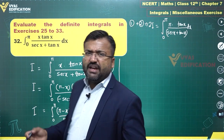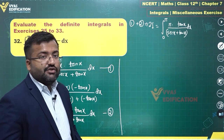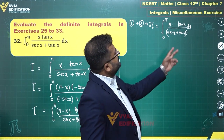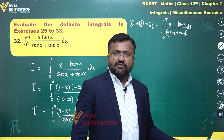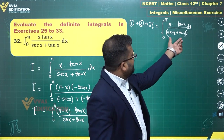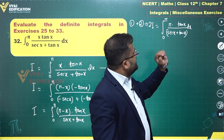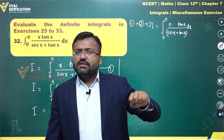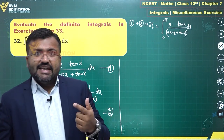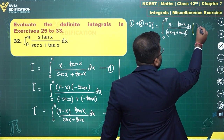So 2I equals π times the integral from 0 to π of tan x/(sec x + tan x) dx. Now, π is fine, but tan x/(sec x + tan x) needs to be integrated. We multiply numerator and denominator by (sec x - tan x), making the denominator sec²x - tan²x, which equals 1.